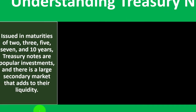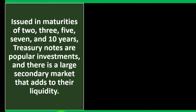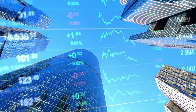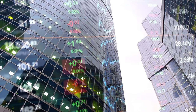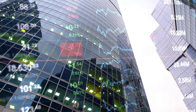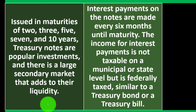Treasury Notes are issued in maturities of 2, 3, 5, 7, and 10 years, and are popular investments with a large secondary market that adds to their liquidity. They're a bit longer term than T-bills. The primary market means buying directly from the government; you can also sell or purchase them on the secondary market.